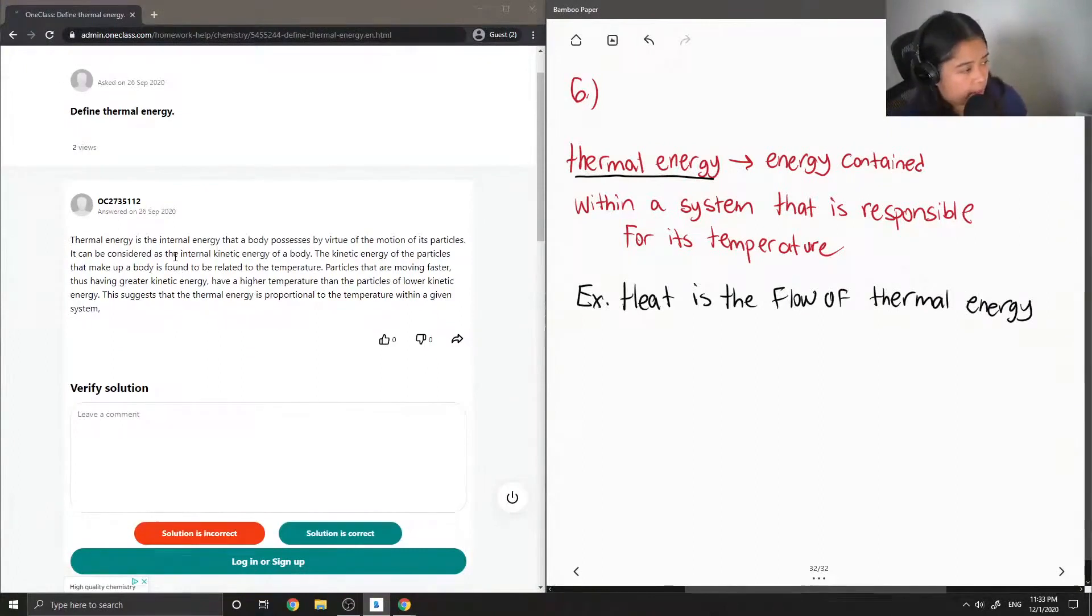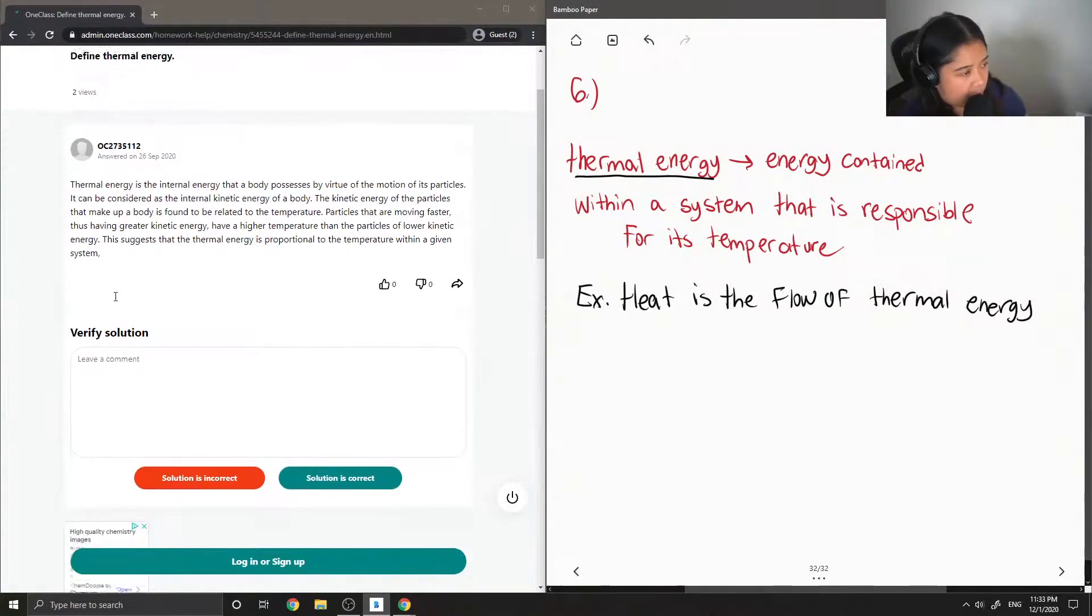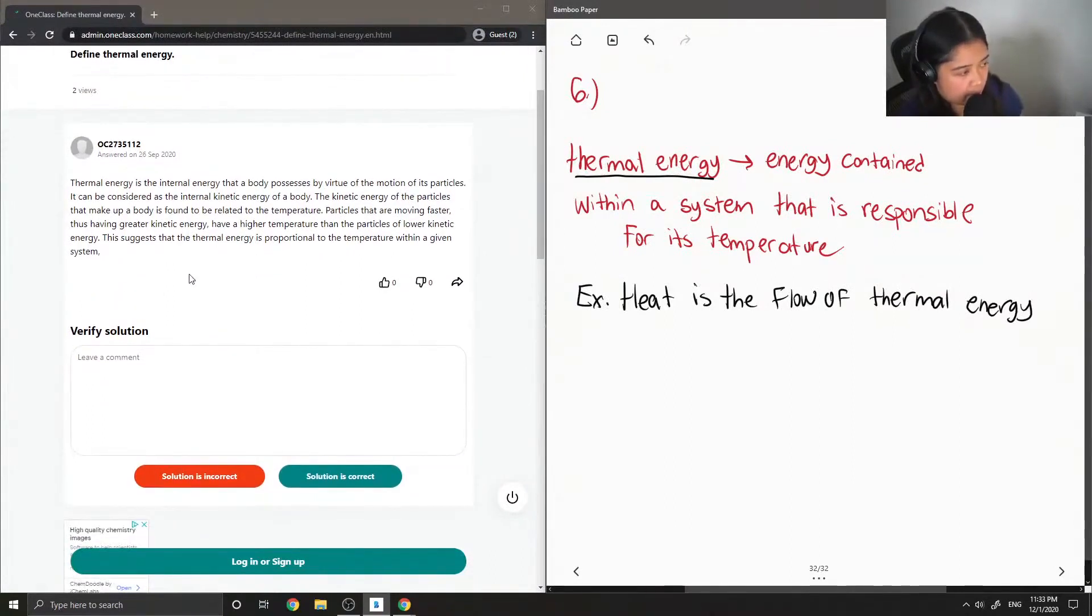Thermal energy is the internal energy that a body possesses by virtue of the motion of its particles. It can be considered as the internal kinetic energy of a body. The kinetic energy of the particles that make up a body is found to be related to the temperature. Particles that are moving faster, thus having greater kinetic energy, have a higher temperature than the particles of lower kinetic energy. This suggests that the thermal energy is proportional to the temperature within a given system.